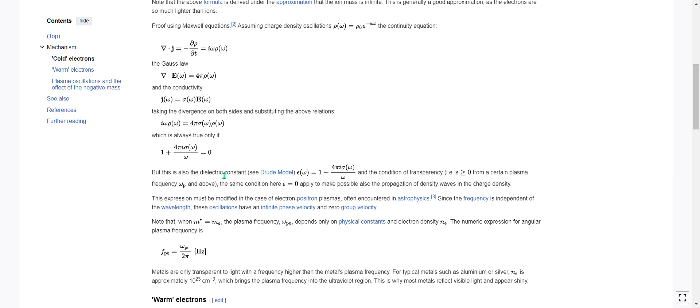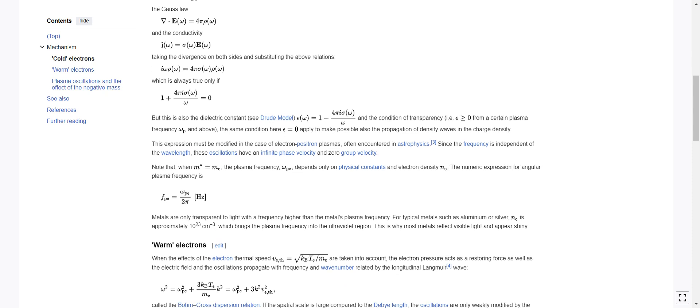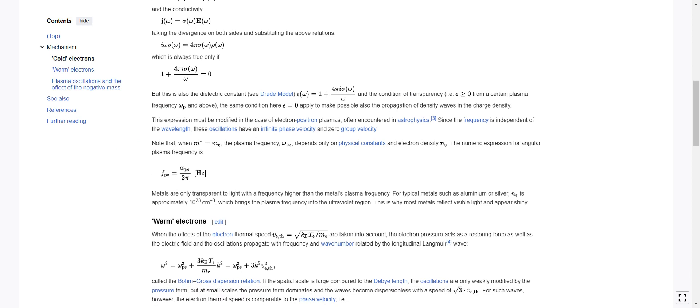So this is also the dielectric constant, epsilon of omega equals 1 plus 4 pi i sigma of omega over omega, and the condition of transparency. For example, epsilon greater than or equal to 0 from a certain plasma frequency omega sub p and above. The same condition here, epsilon equals 0, applied to make possible also the propagation of density waves in the charge density.